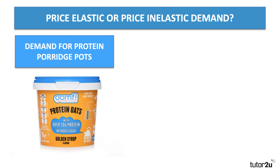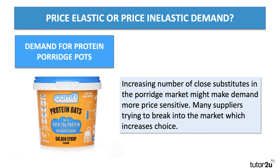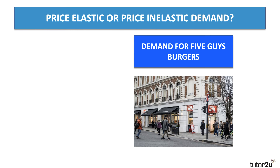Here's a third example: the demand for protein porridge pots. We're seeing growth in the market for single-use porridge pots and other consumables. We thought that because there are an increasing number of close substitutes — from usual ones made by big manufacturers like Umph, Mama, and Tate & Lyle — as the market becomes more saturated with competing products, demand might well become more price sensitive. With many suppliers trying to break into the market and consumer choice increasing, demand tends to become elastic.